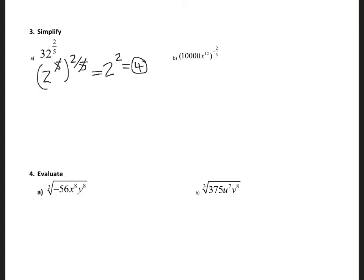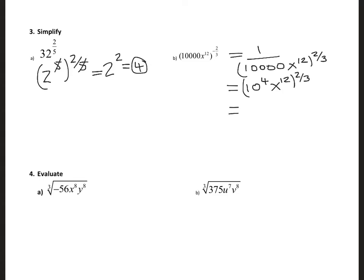Here we have 10,000 — note the exponent is negative — and what I'm going to do is rewrite it as 10,000 x to power 12, all raised to two-thirds. I can write 10,000 as 10 to power 4, and then x to power 12, with the exponent two-thirds. Then I distribute the exponent to get 10 to power 8 over 3.